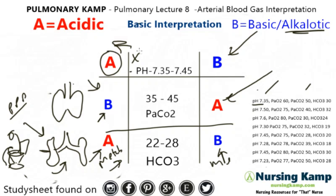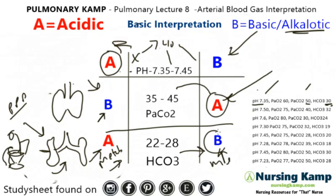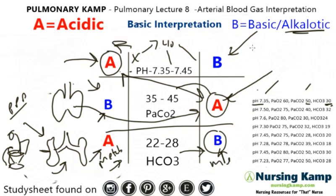The pH is 7.35 — there's a middle section at 7.40, so it's closer to the acidic side and we circle that. Next is the PACO2 at 50 — normal PACO2 is 45, so it's over to the acidic side. Then the bicarb is 30, so it's over to the basic side. We match the two that are alike: this section is respiratory and this section is acidosis, so this person has respiratory acidosis.